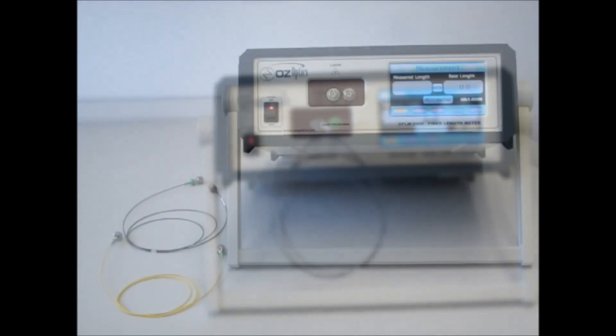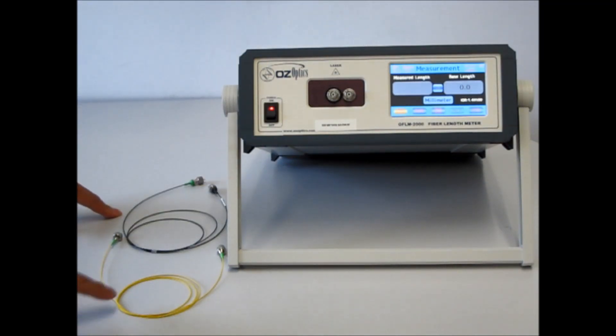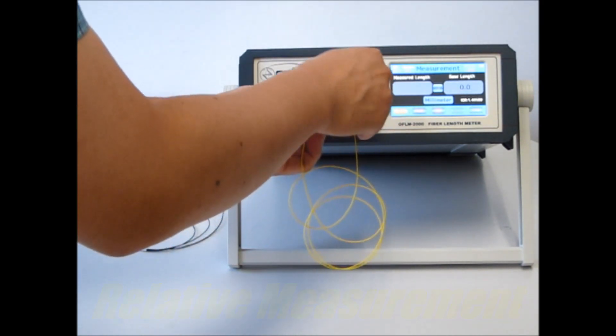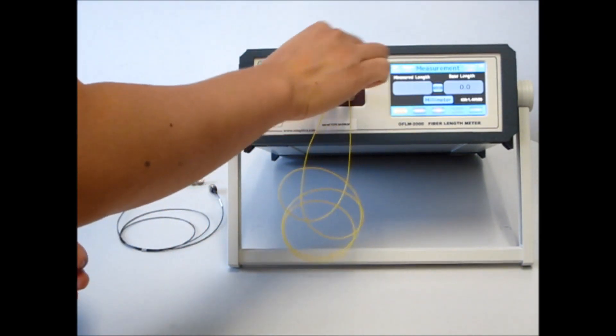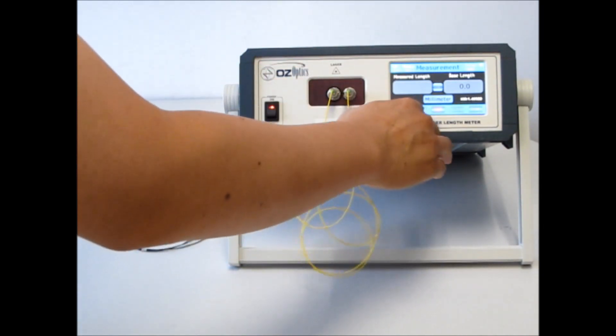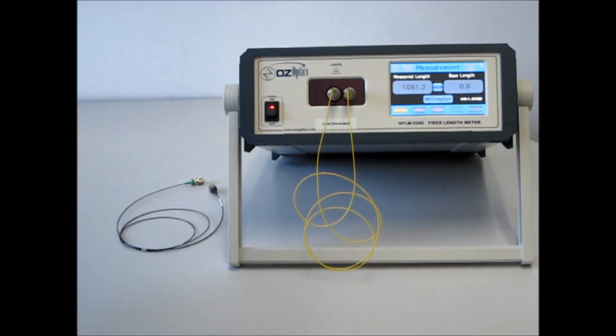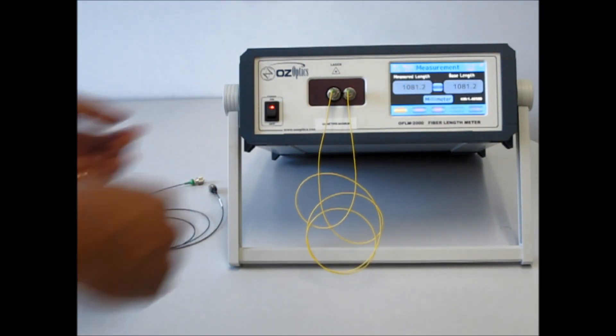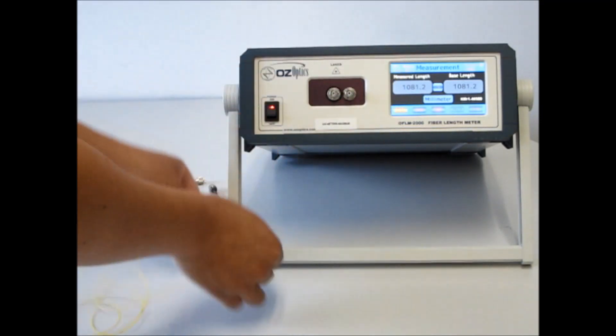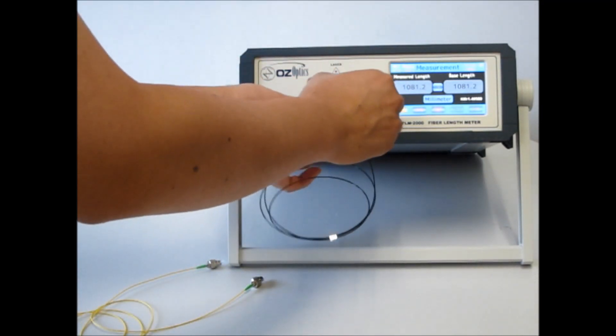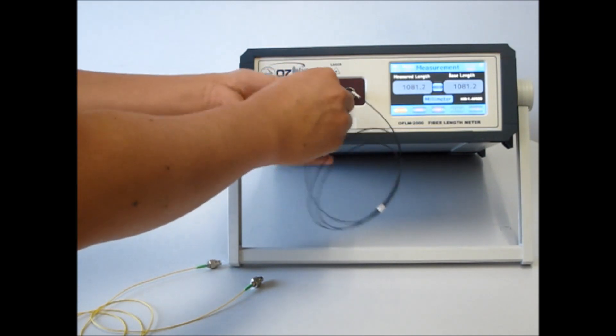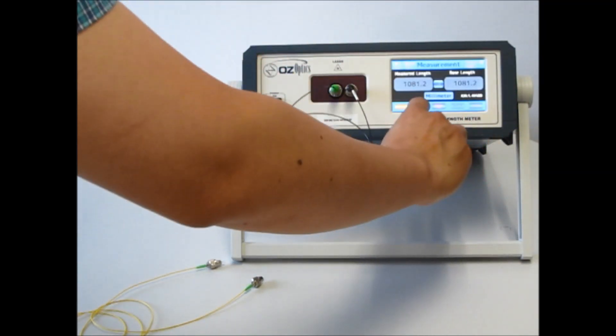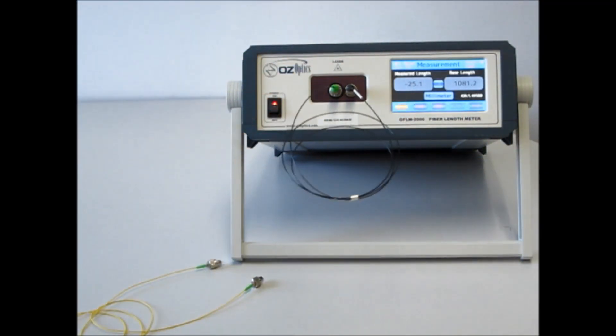The fiber length meter comes with a built-in feature that allows for relative measurement between two different fibers. I have the two patch cords from earlier, and we'll plug the yellow one in and make a measurement. In the center of the screen, there is a right arrow. When we push it, the fiber length meter stores the current measurement as the base length. Now let's unplug the yellow one and plug the black patch cord in. When we push the run button, we can see that this patch cord is 25 millimeters shorter than the first.